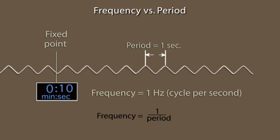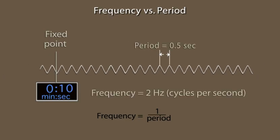A frequency of one cycle per second has a one second period. If the frequency doubles to two cycles per second, the period is only half of a second.